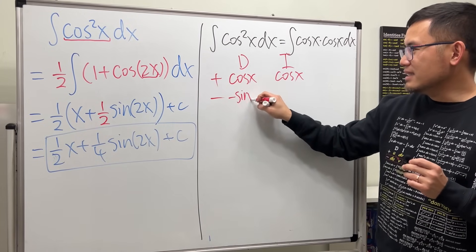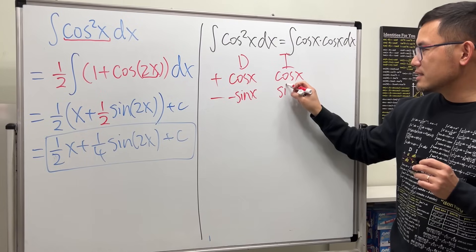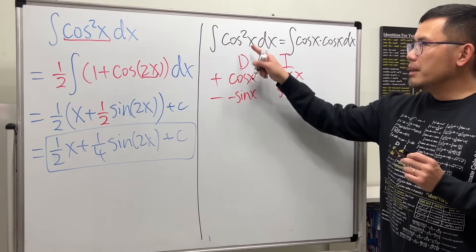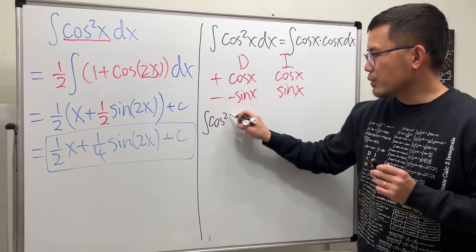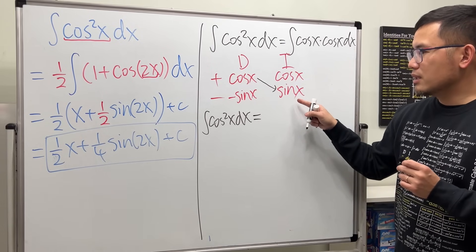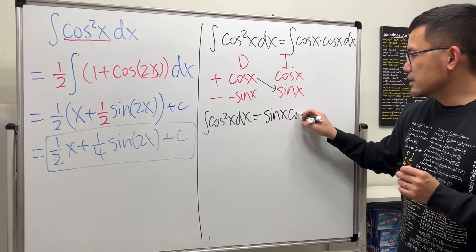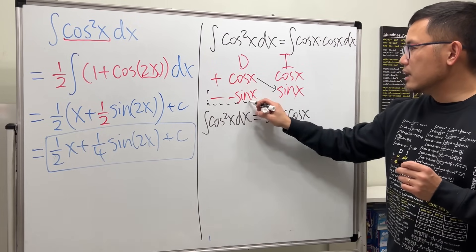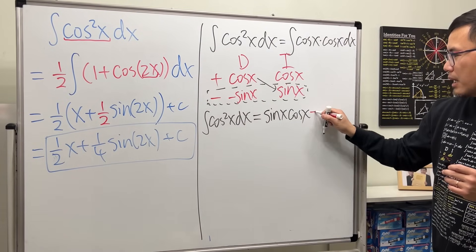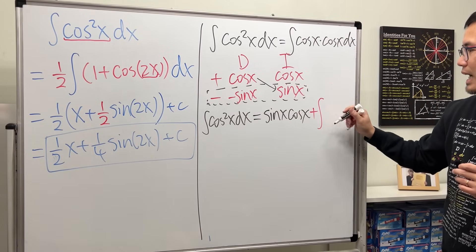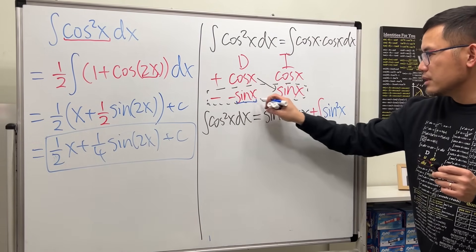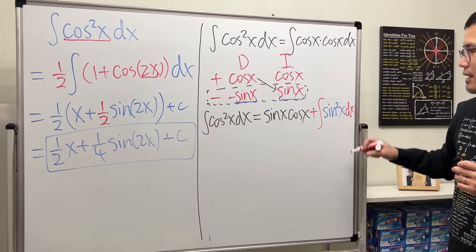Differentiating cosine x gives negative sine x. Integrating cosine x gives positive sine x. This is enough — we'll end up with a repeating situation. Applying the IBP formula: this times this gives the first part, sine x times cosine x. Then we multiply the two remaining parts and put that in a self-integral — with the negative sign times the negative, it's a positive integral of sine x times sine x, which is sine squared x.